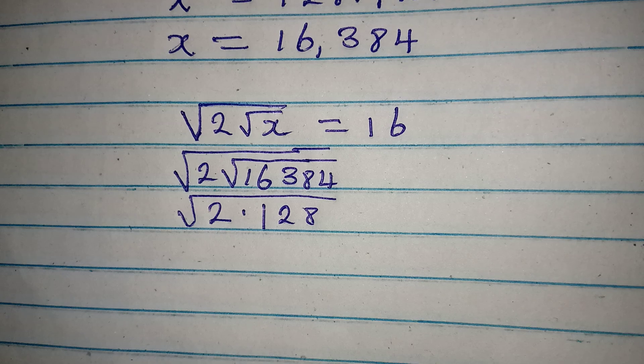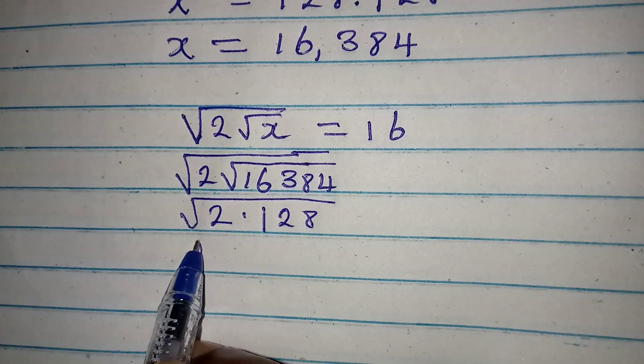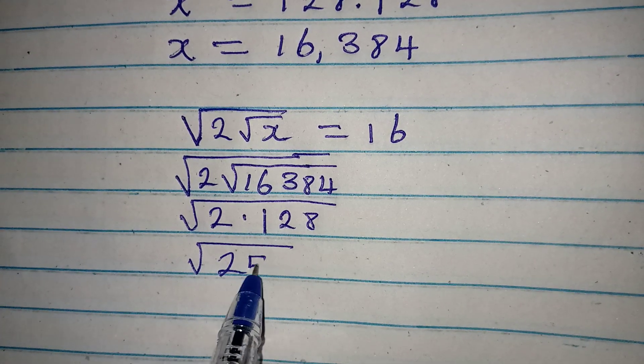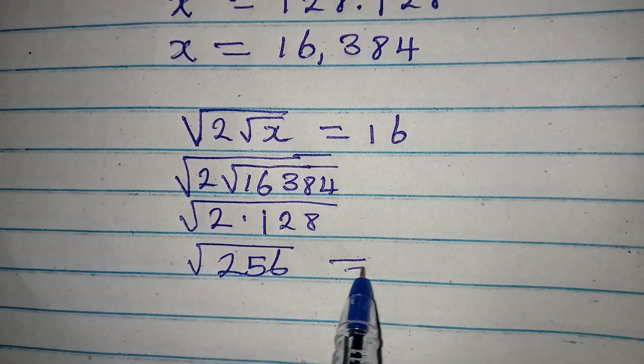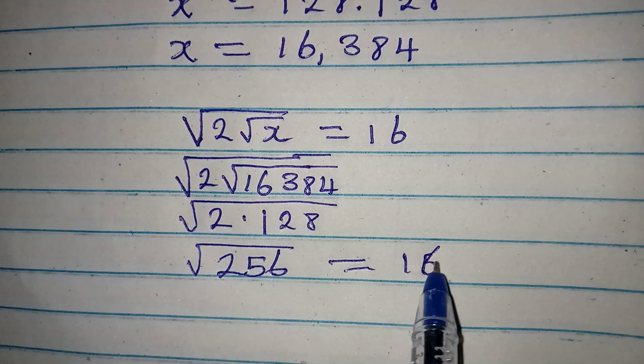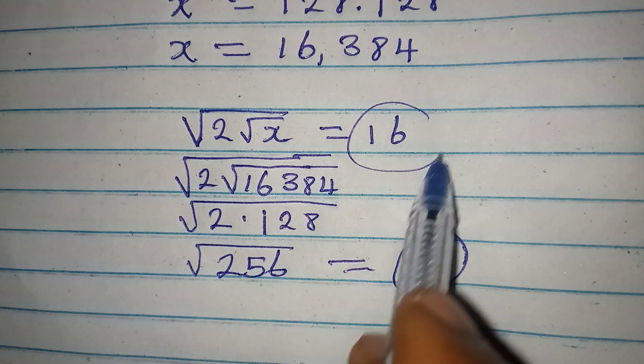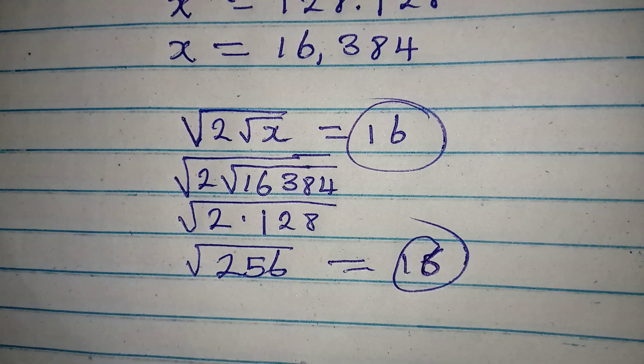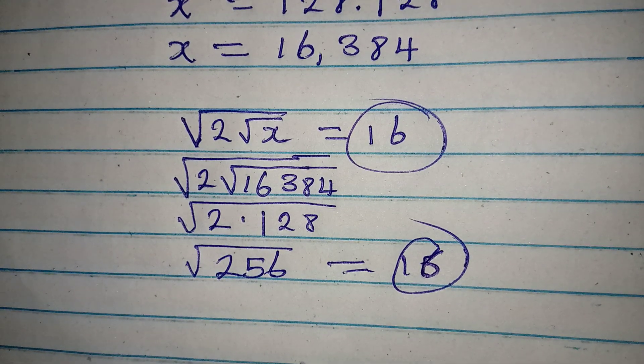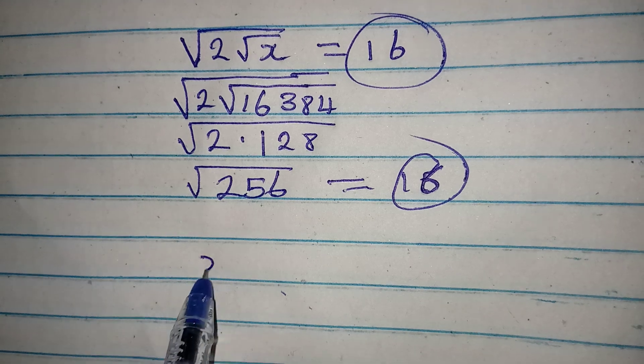And if we multiply this by this, then we have square root of 256, which will give 16. And this is what we had on the right-hand side, so this confirms that X to be equal to 16,384 is very correct.